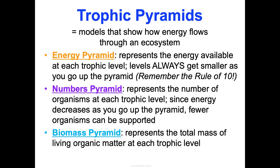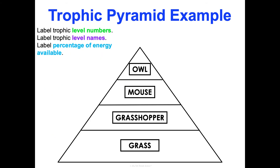Let's go back to our grass, grasshopper, mouse, owl food chain. Grass is the producer — level one. Grasshoppers eat them — level two. Mice eat them — level three. Owls eat them — level four. To label trophic level numbers, we always start at the bottom: producers are level one, grasshopper is two, mouse is three, owl is four. Level one is always the producer, level two is the primary consumer, level three is secondary, level four is tertiary.